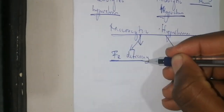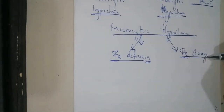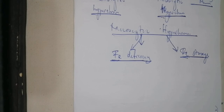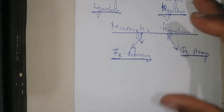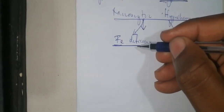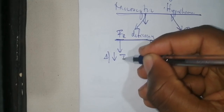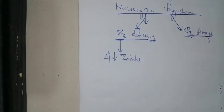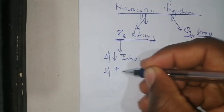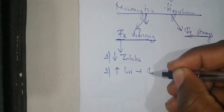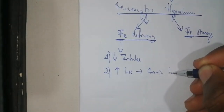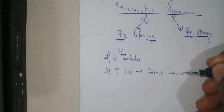It can either be iron deficiency anemia or iron storage disorder — that is, iron deficiency anemia due to iron storage problems. In the case of iron deficiency anemia, one cause is reduced intake of iron. Another cause is increased loss of iron, particularly in the case of chronic hemorrhage — not acute hemorrhage, but chronic hemorrhage.